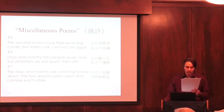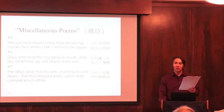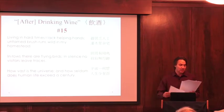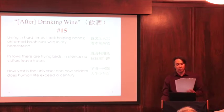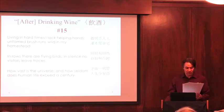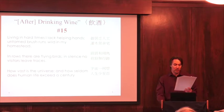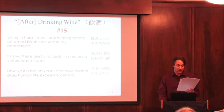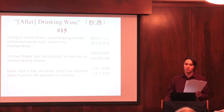The third poem states: The sun and moon have their revolving cycles, but when I die I will not rise again. The second poem reads: Days and months toss people aside. Our ambitions do not reach their aim. And the seventh poem, describing the cycle of time, says: The sun and moon are unwilling to slow down. The four seasons press upon and compel each other. The picture Tao paints is one where human beings are not only different from other things in the world, but the world itself competes with human beings to the point that we are at odds with other forces in the world. Time manifests in the physical forms of the sun and moon, push us aside as they move on their way. These celestial bodies maintain an endless cycle while we have only one rotation.